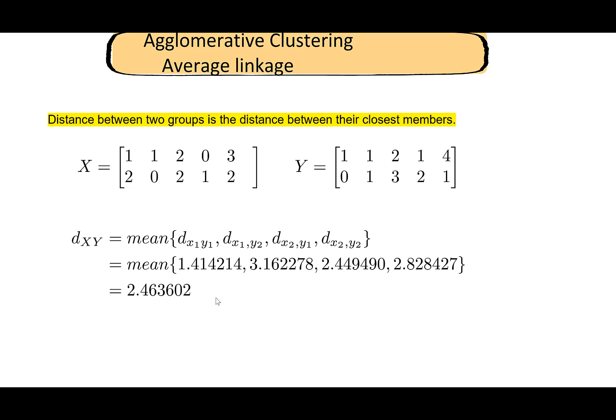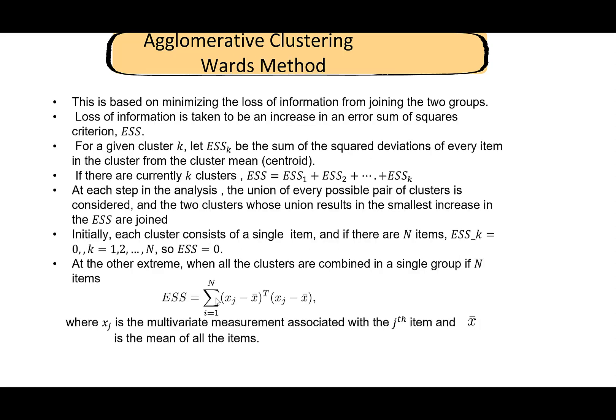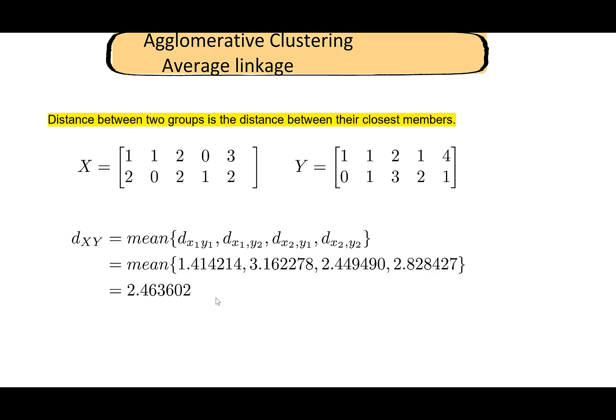I'm not going to walk through a full average linkage example because it proceeds in exactly the same way — the only change is that instead of taking the maximum, you calculate the mean of the distances. It is a good idea to go back and redo the example using this mean of distances for practice.